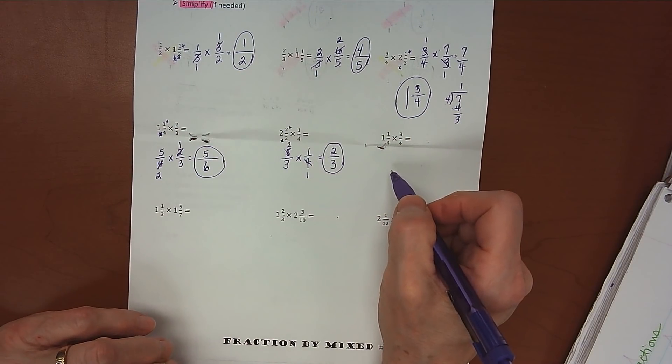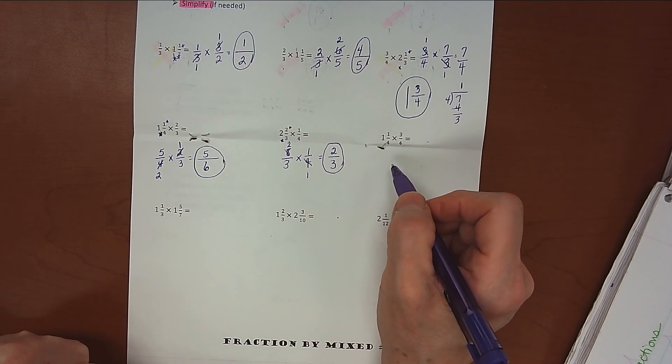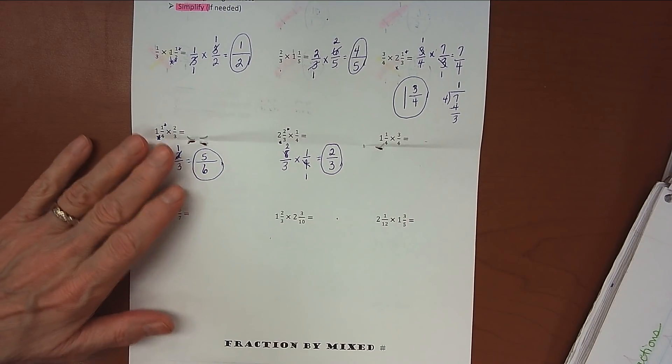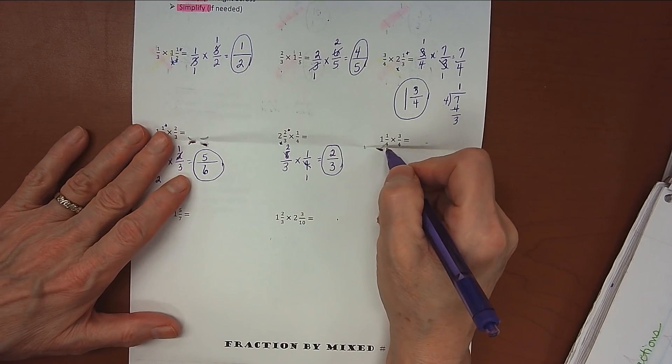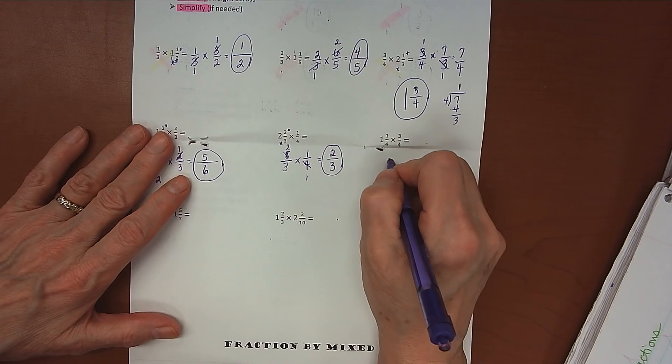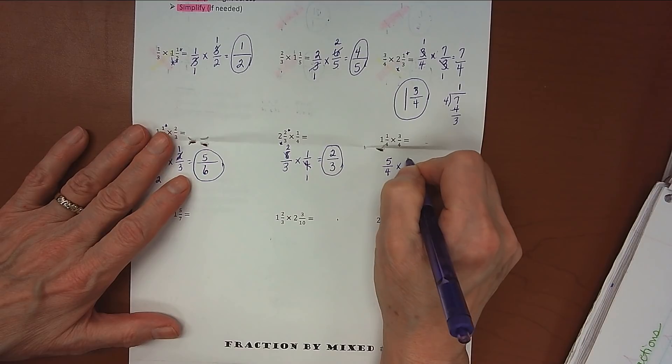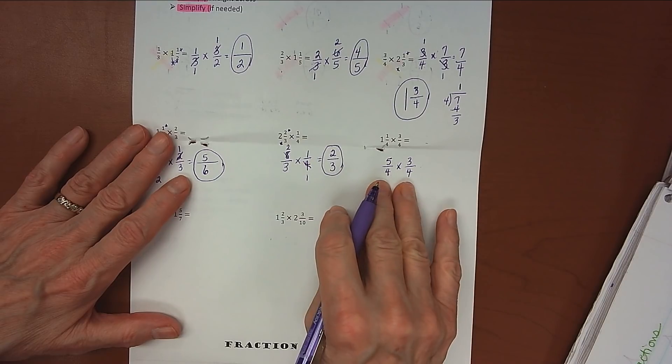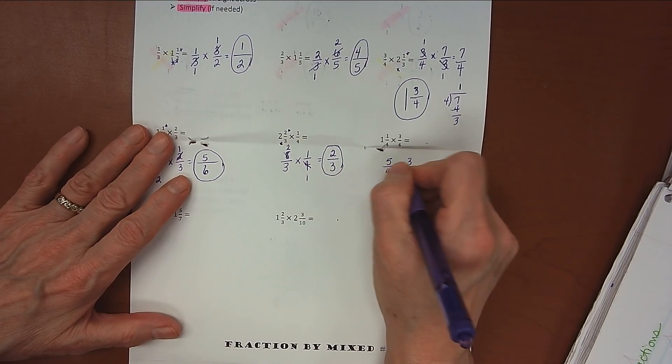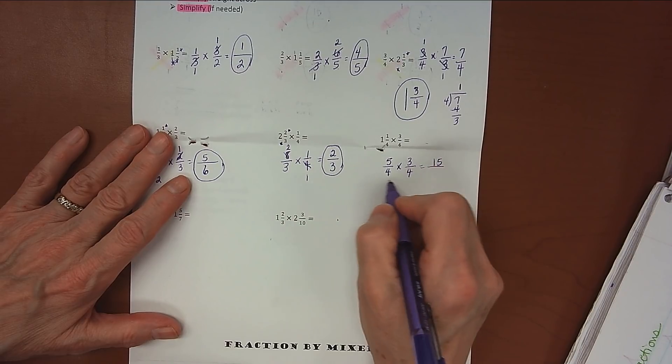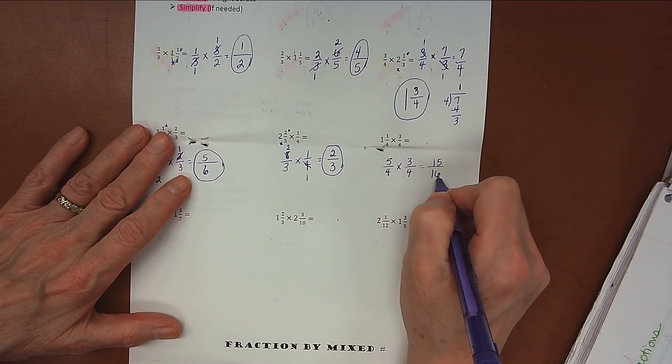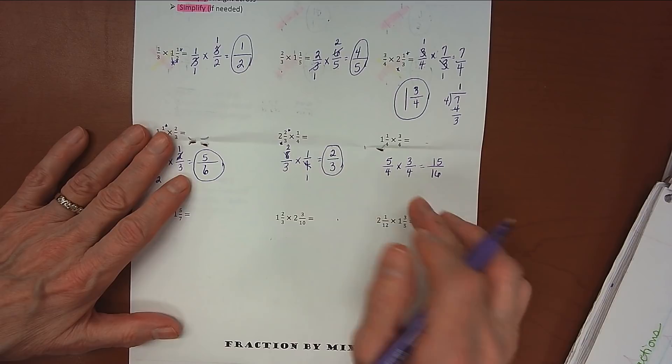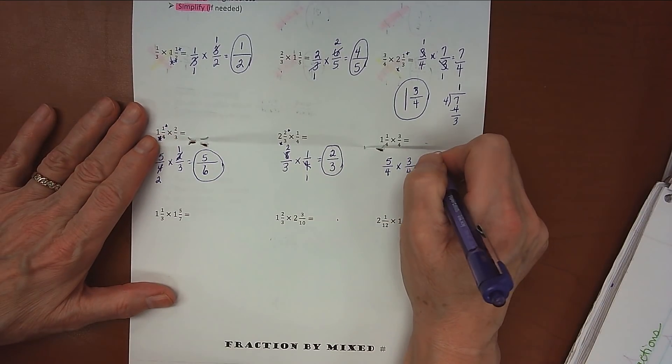Why don't you go ahead and stop your video, try this one on your own, and then start the video up again and check to see how you did before we move into the ones that are both mixed numbers. Alright, let's see how you did. 1 times 4 is 4, plus 1 is 5, so this is 5/4 times 3/4. Look for places to cross-simplify, and we don't have any. 5 times 3 is 15. Now remember, you've got to multiply these denominators. 4 times 4 is 16. Even though they're the same, when we were adding or subtracting we'd just bring that over, but we're multiplying now, so we still have to multiply those. And so we've got 15/16.